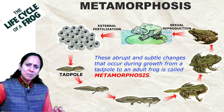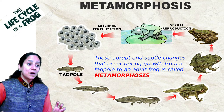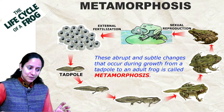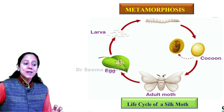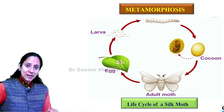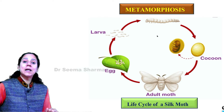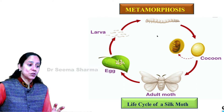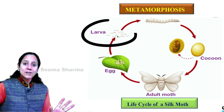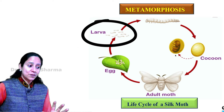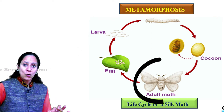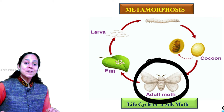A similar observation can be made from the life cycle of the silk moth. In the life cycle of the silk moth, there are also sudden and abrupt changes — the initial stage of the organism does not resemble the adult one. This is metamorphosis.